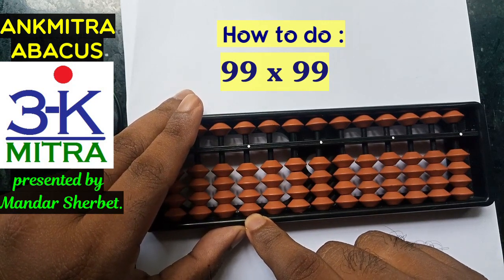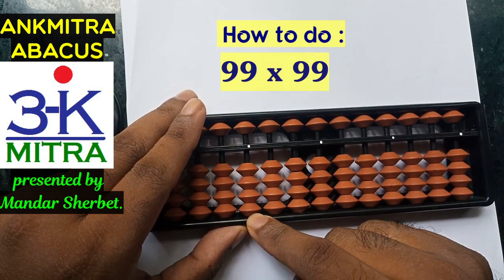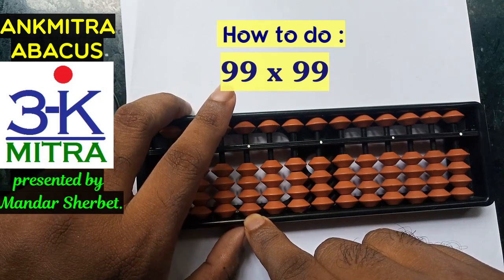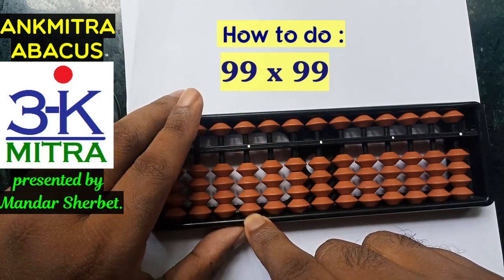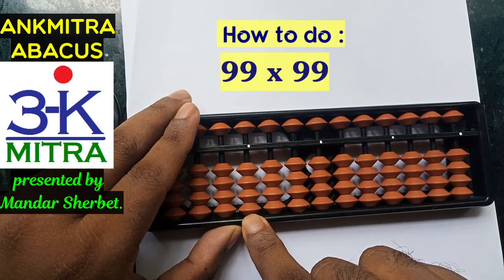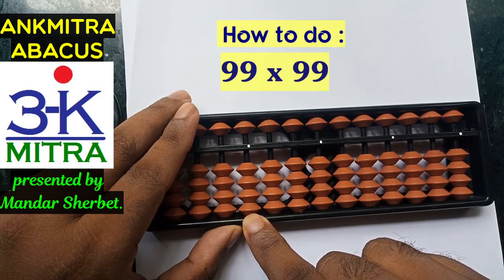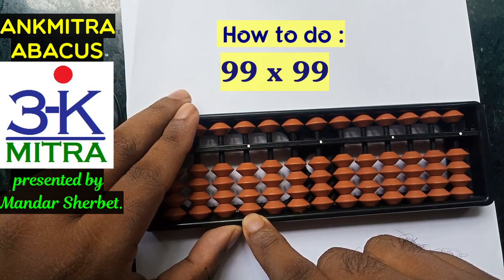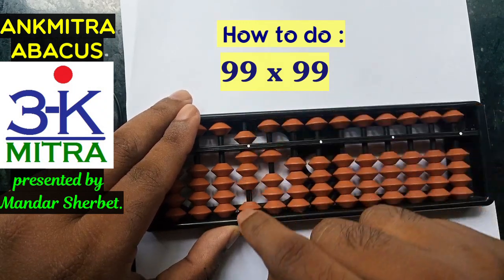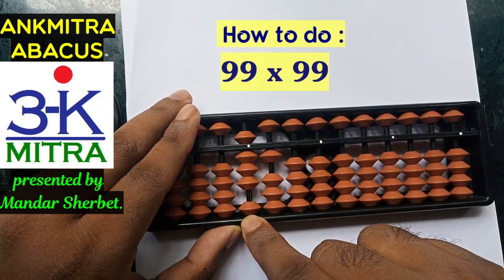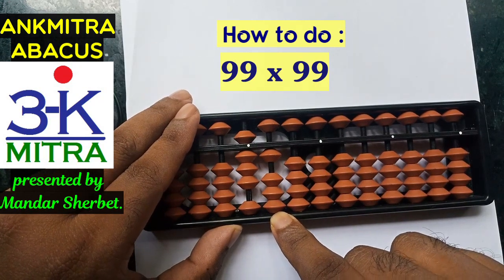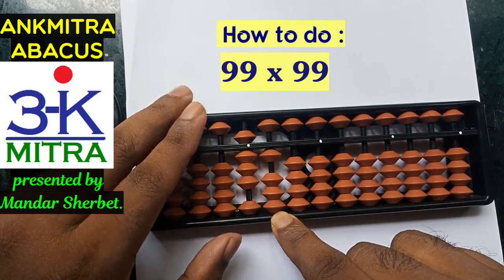The regular procedure says we start with the tens place digit of the first number multiplied by the tens place digit of the second number, and take that answer from the fourth rod. Nine times nine is 81, so we take 81 from the fourth rod. Then we move one place to the right, that is, move to the third rod.